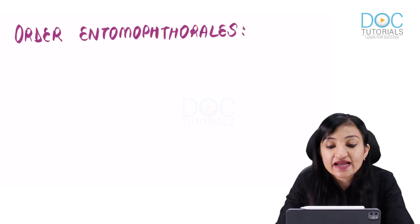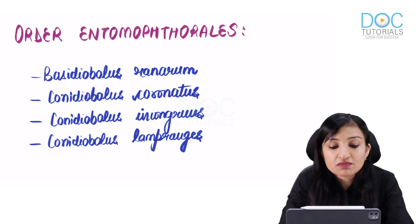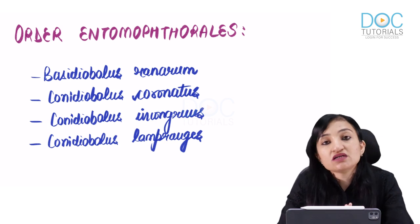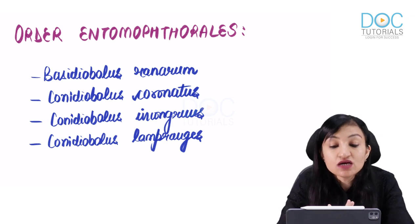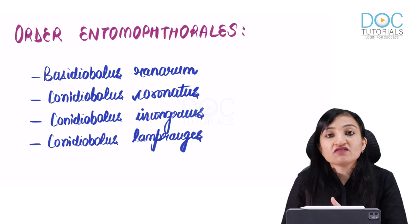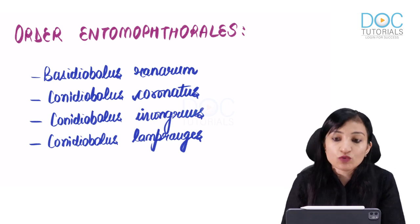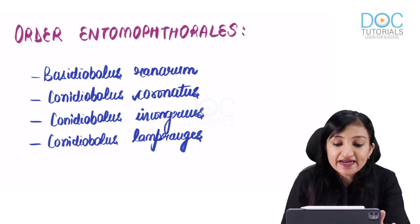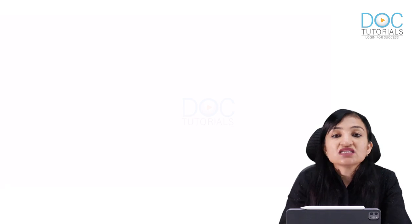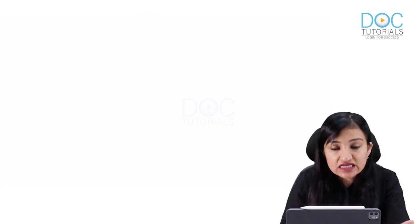For order Entomophthorales, just remember two important genera: Basidiobolus and Conidiobolus, which respectively cause Basidiobolomycosis and Conidiobolomycosis. So Mucormycosis is caused by these fungi.